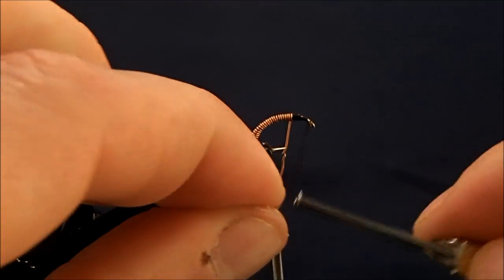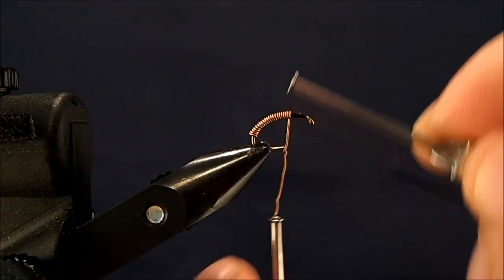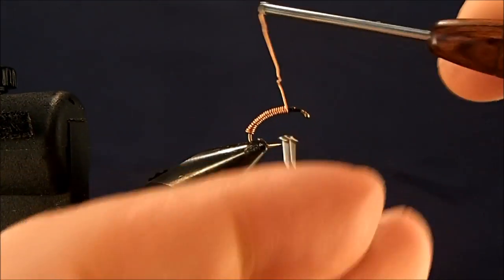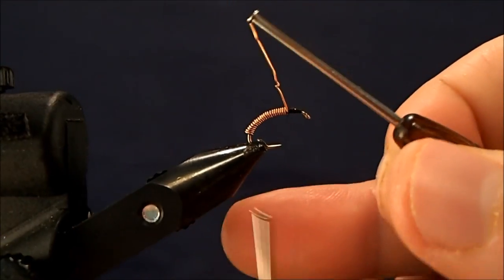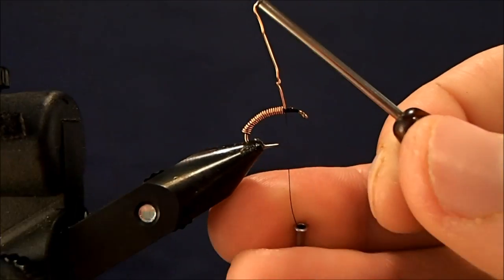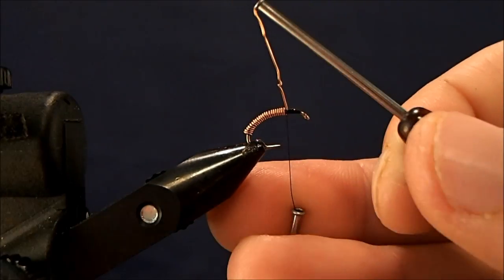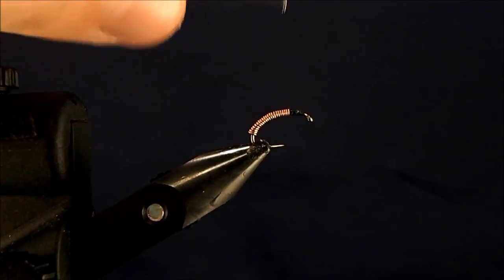So I'll bring my thread back on. Take it right back up to where the wire ended. And I'll bring that up and give a couple of nice, tight turns here. One more. I'll keep tension on that, and then I should just be able to helicopter that off.